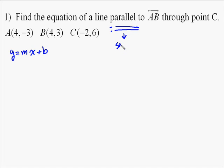And so we find the slope of AB, then we know the slope of the line through C. So we use a formula, m slope equals y1 minus y2 over x1 minus x2.